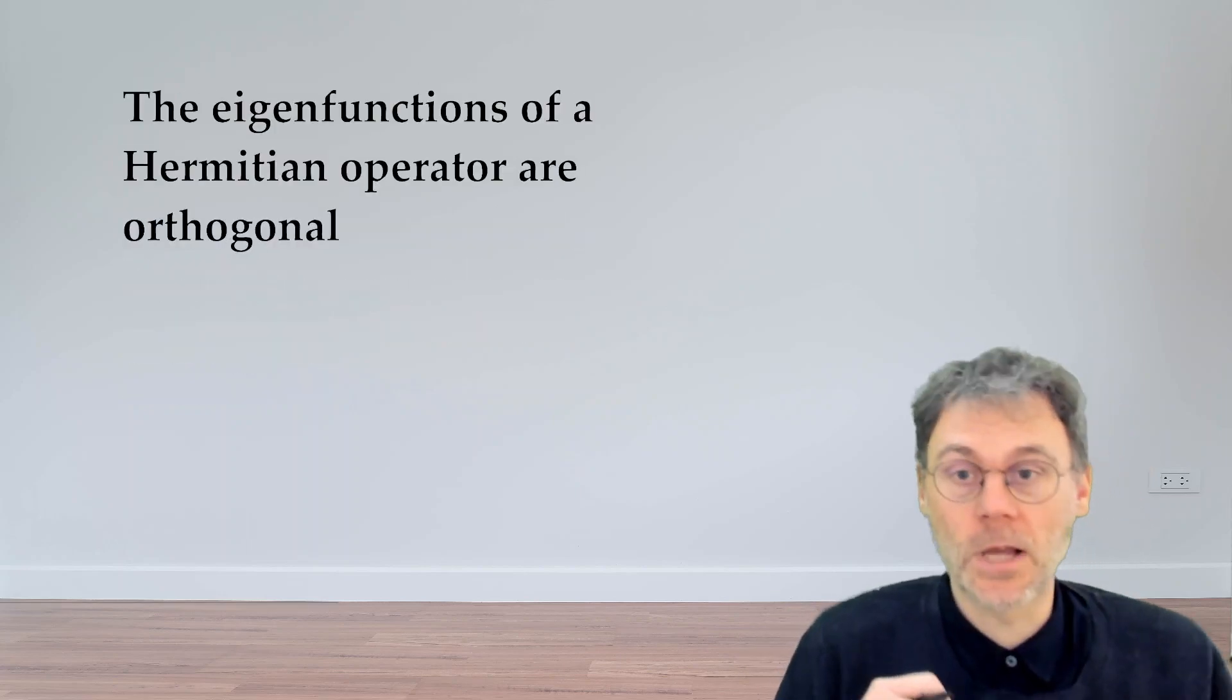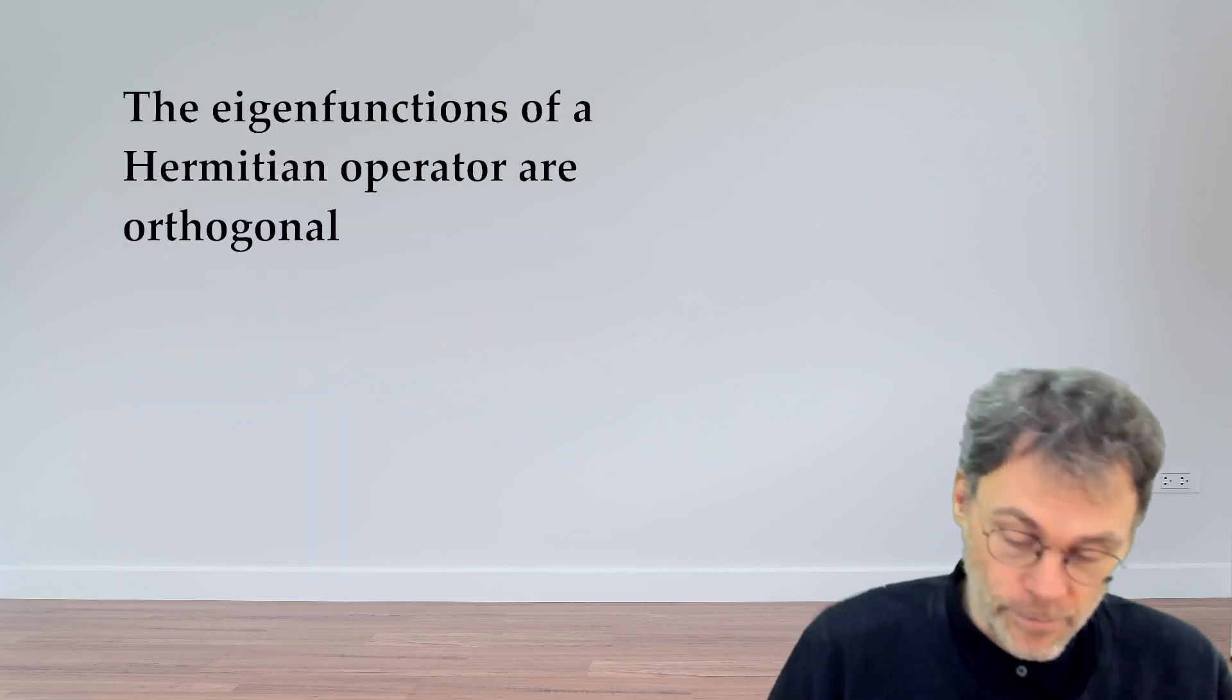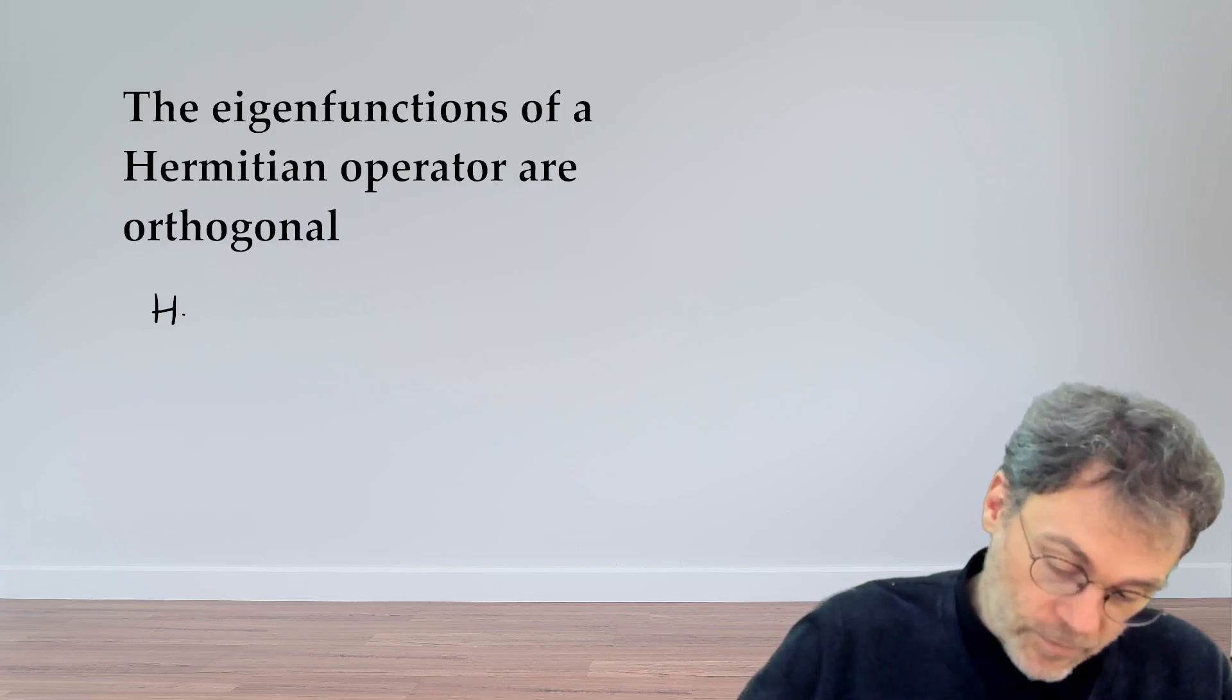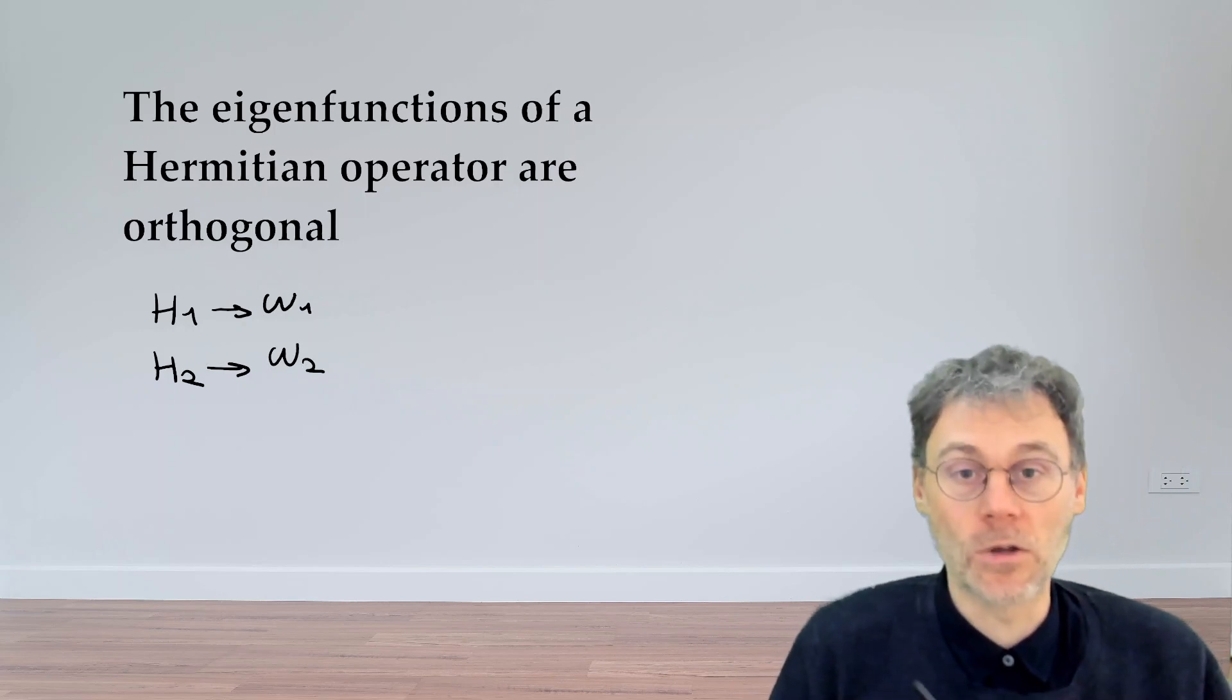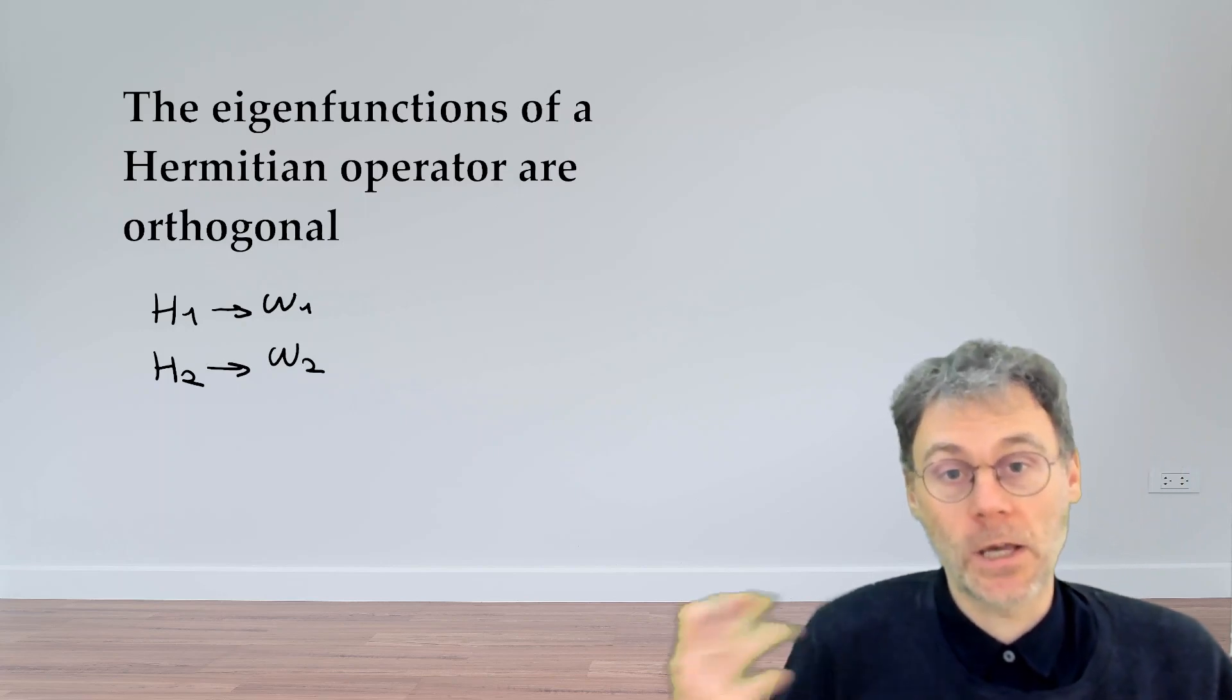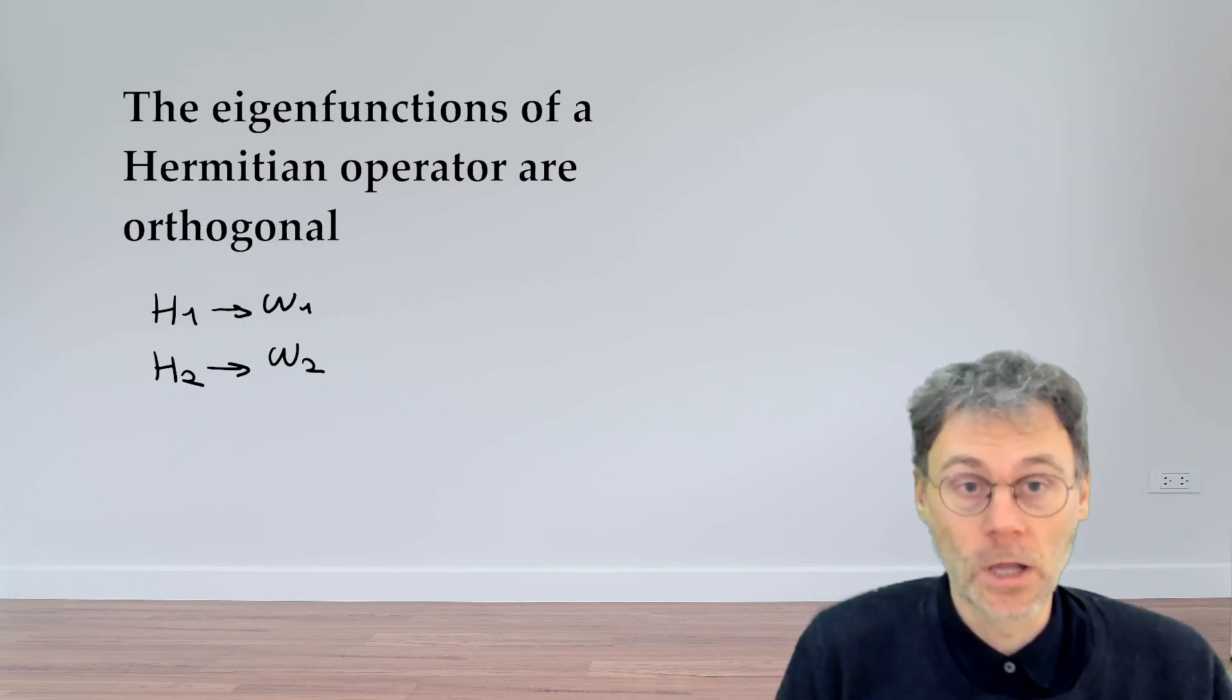We're going to work with the example of the theta operator coming from Maxwell. Let's say we have a magnetic field H1 which has a certain resonance frequency omega 1, and then we have a second eigen solution H2 with resonance frequency omega 2. Can we show that H1 and H2 are orthogonal based on the scalar product that we have defined?